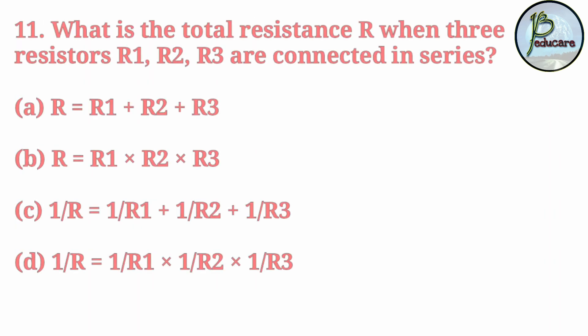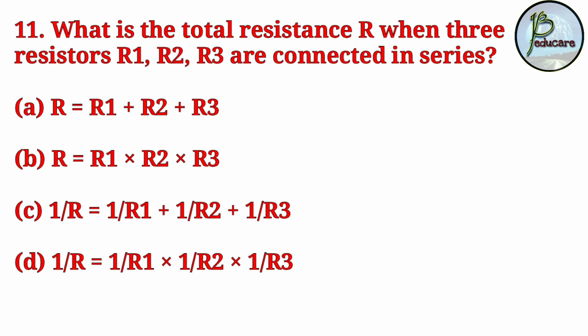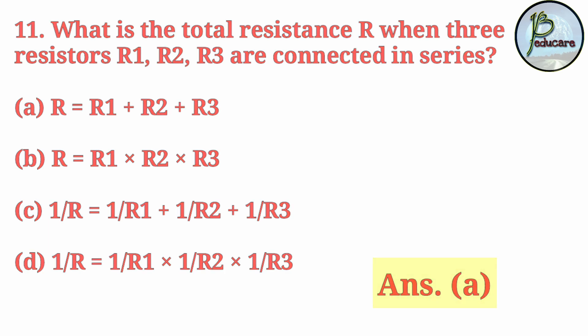Next question: What is the total resistance R when three resistors R1, R2, and R3 are connected in series? When three resistances are connected in series, the formula is R = R1 + R2 + R3. The correct answer is A.